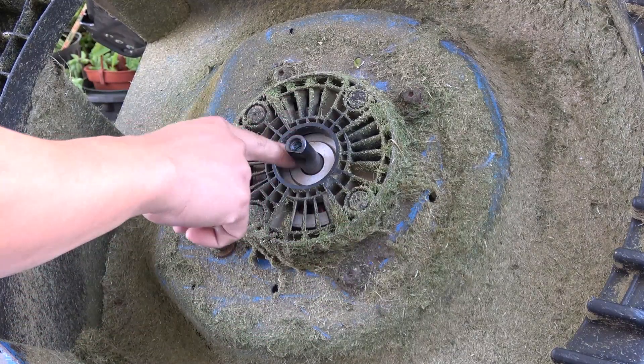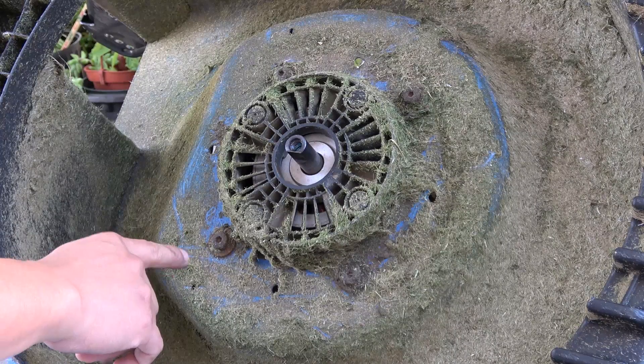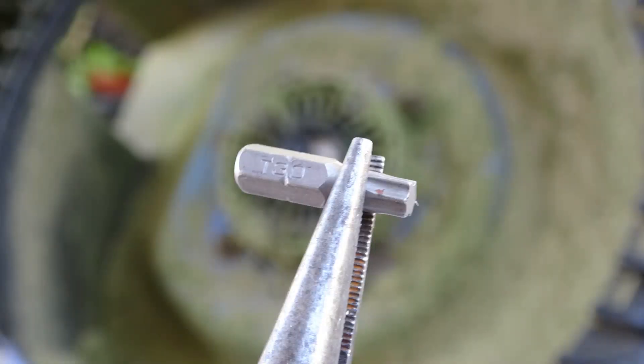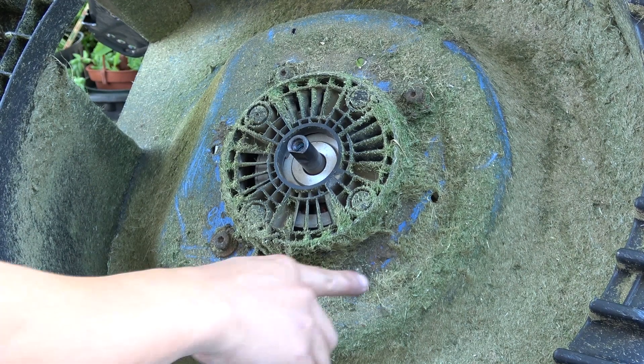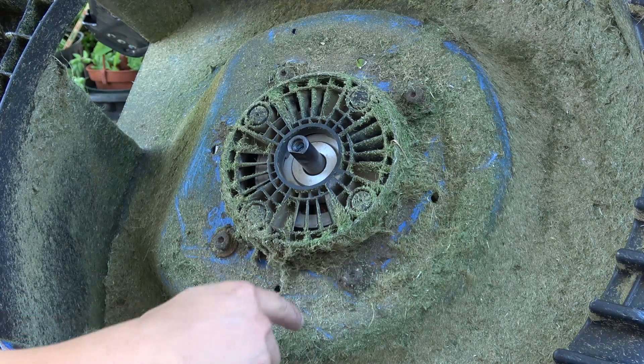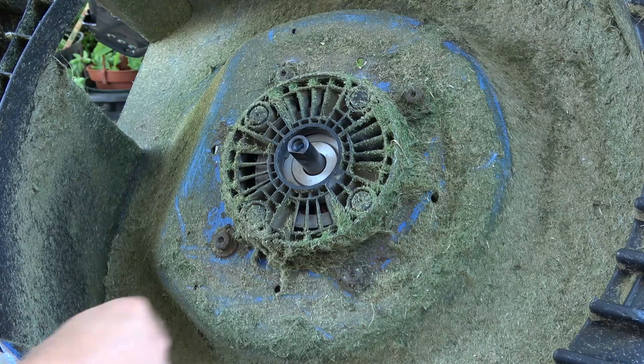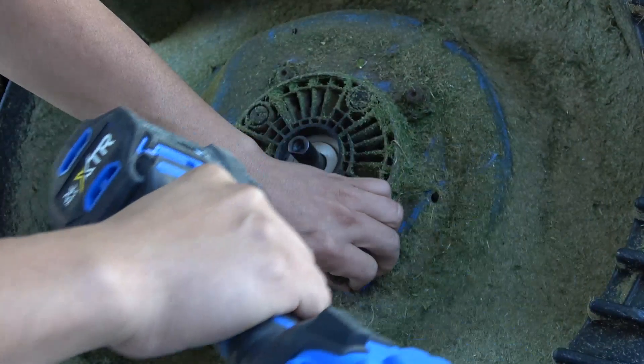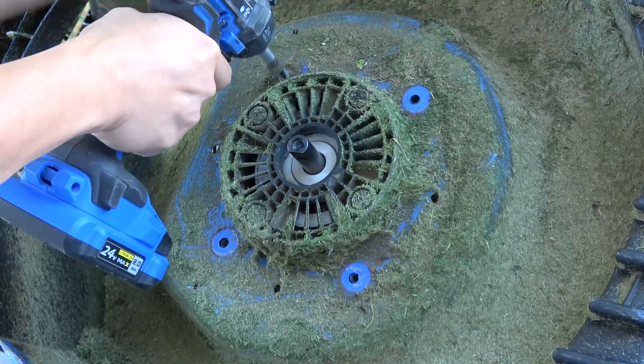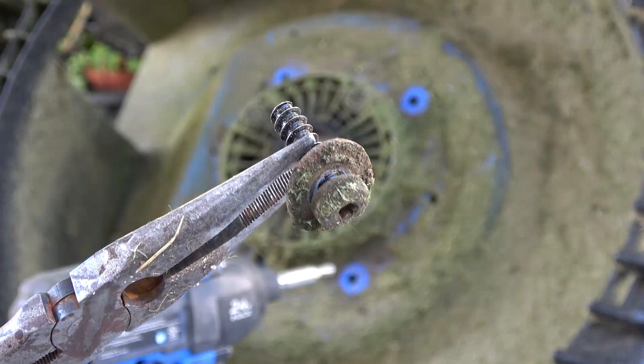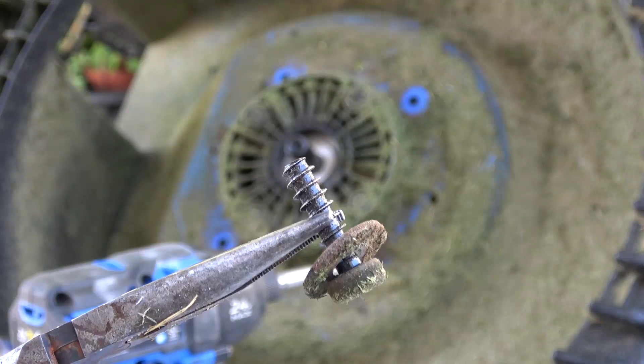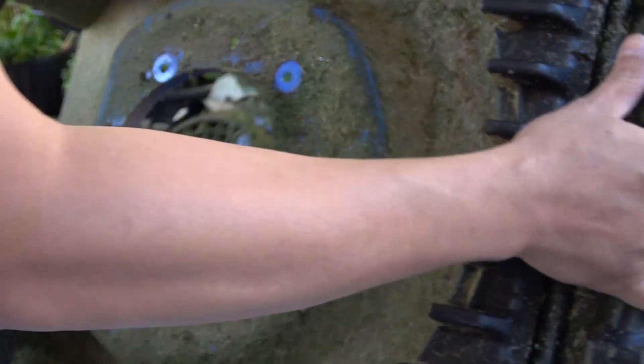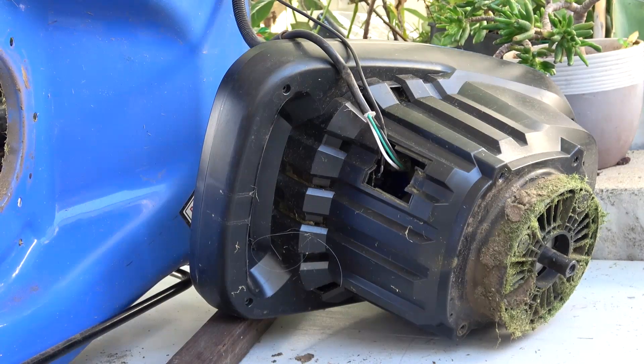Next step is to remove the motor housing and we have to remove four torque screws on the bottom here, size t30. If you have a lot of grass down here sometimes the screws are buried inside so you have to dig it out. Here's what the screw looks like, now it should come out like that.